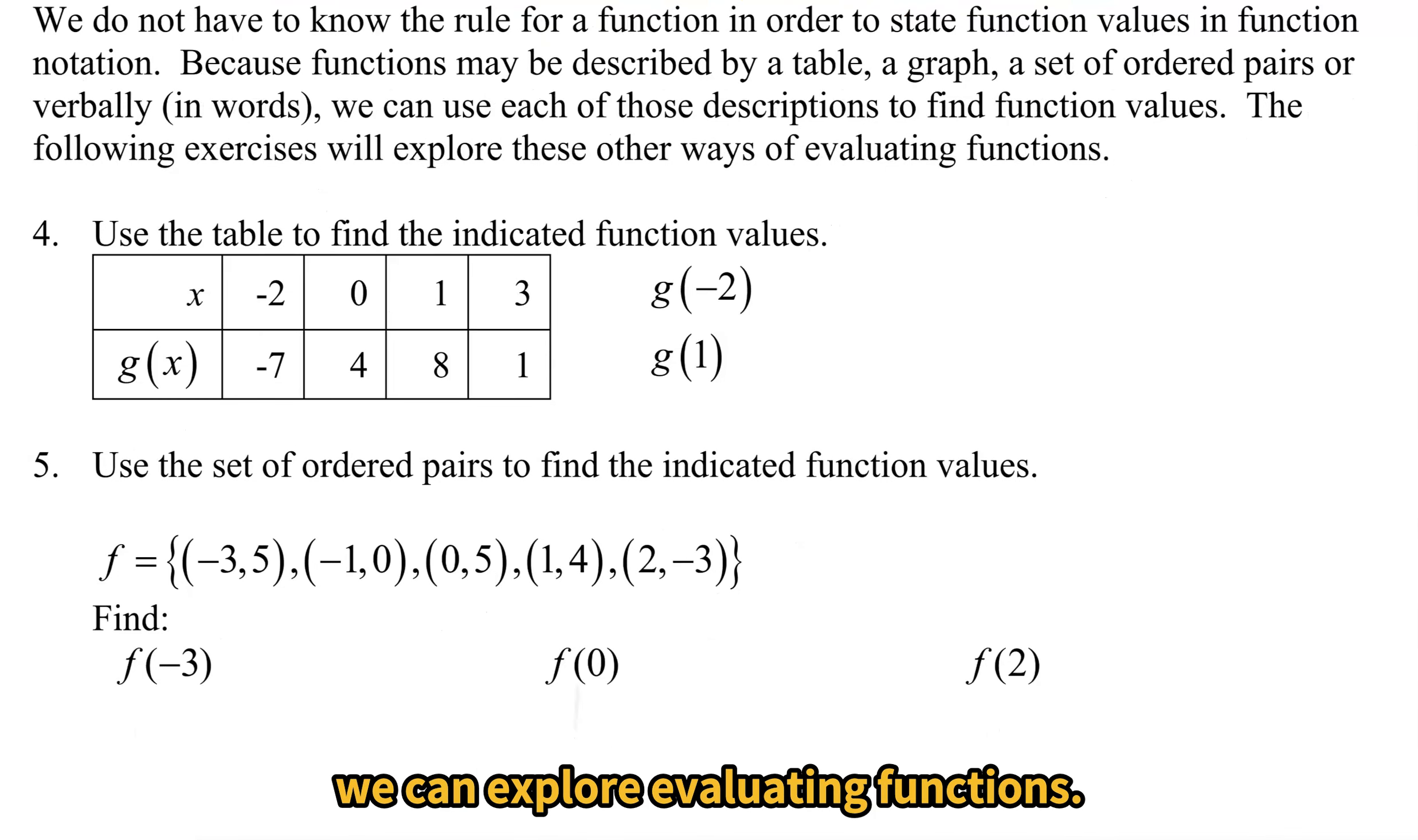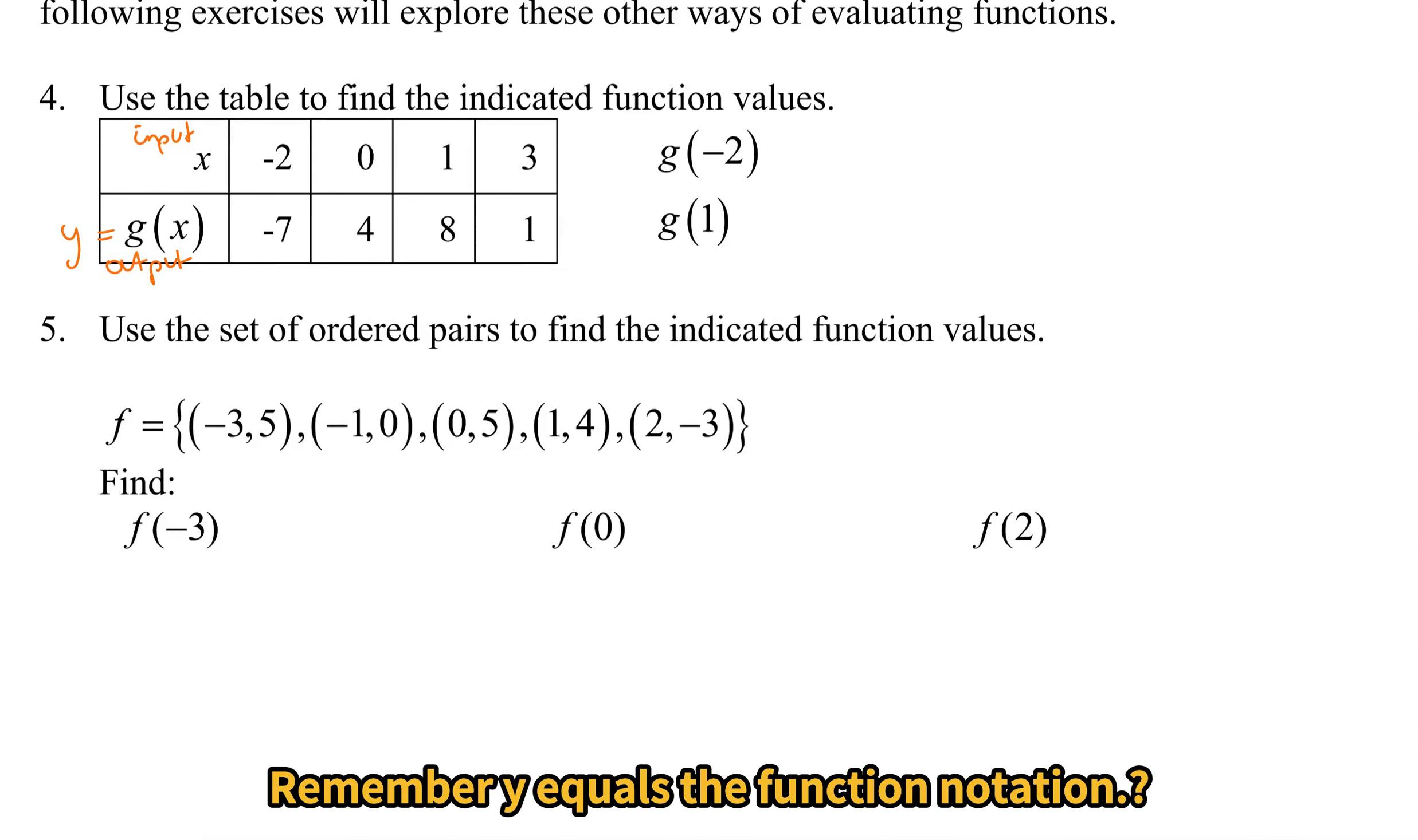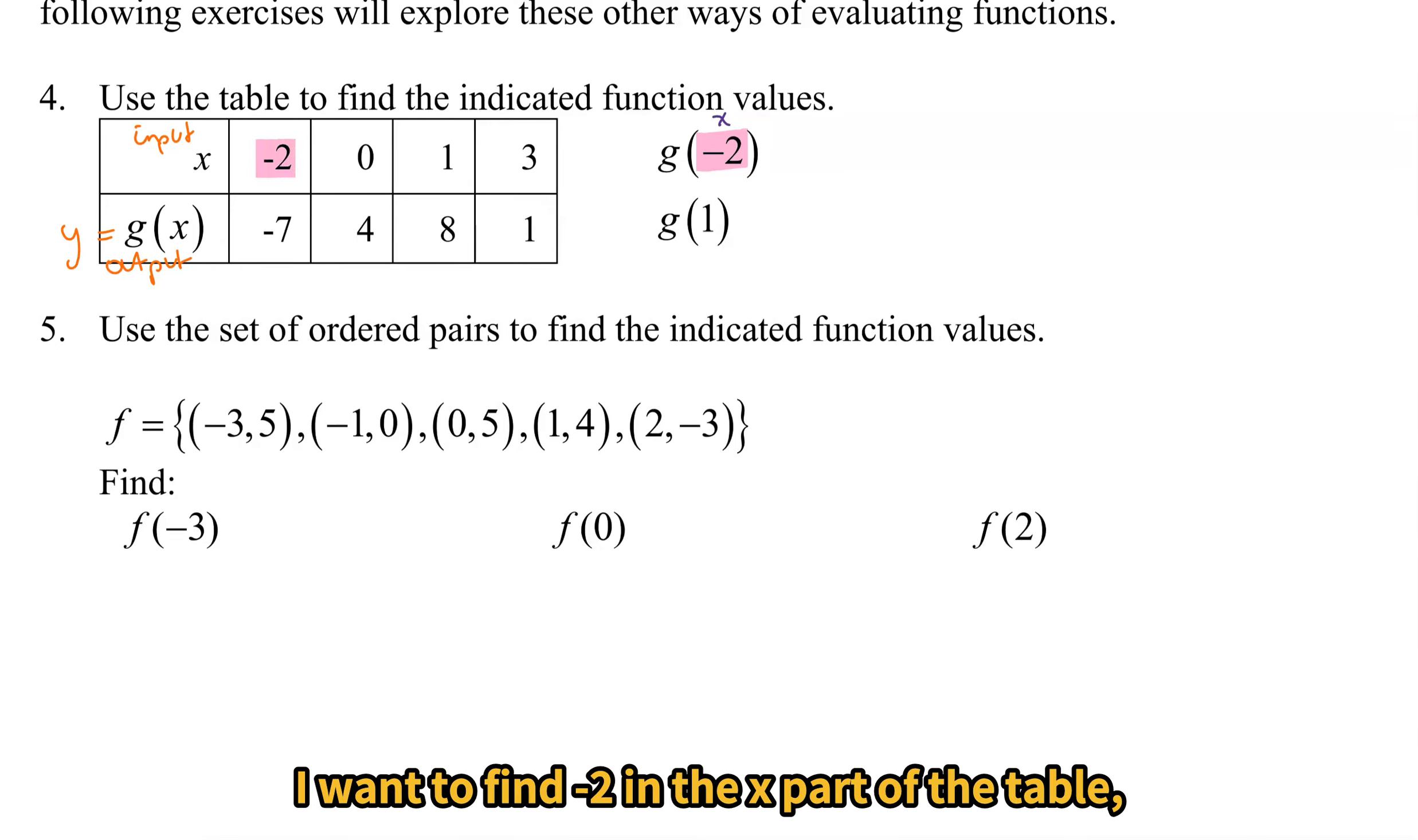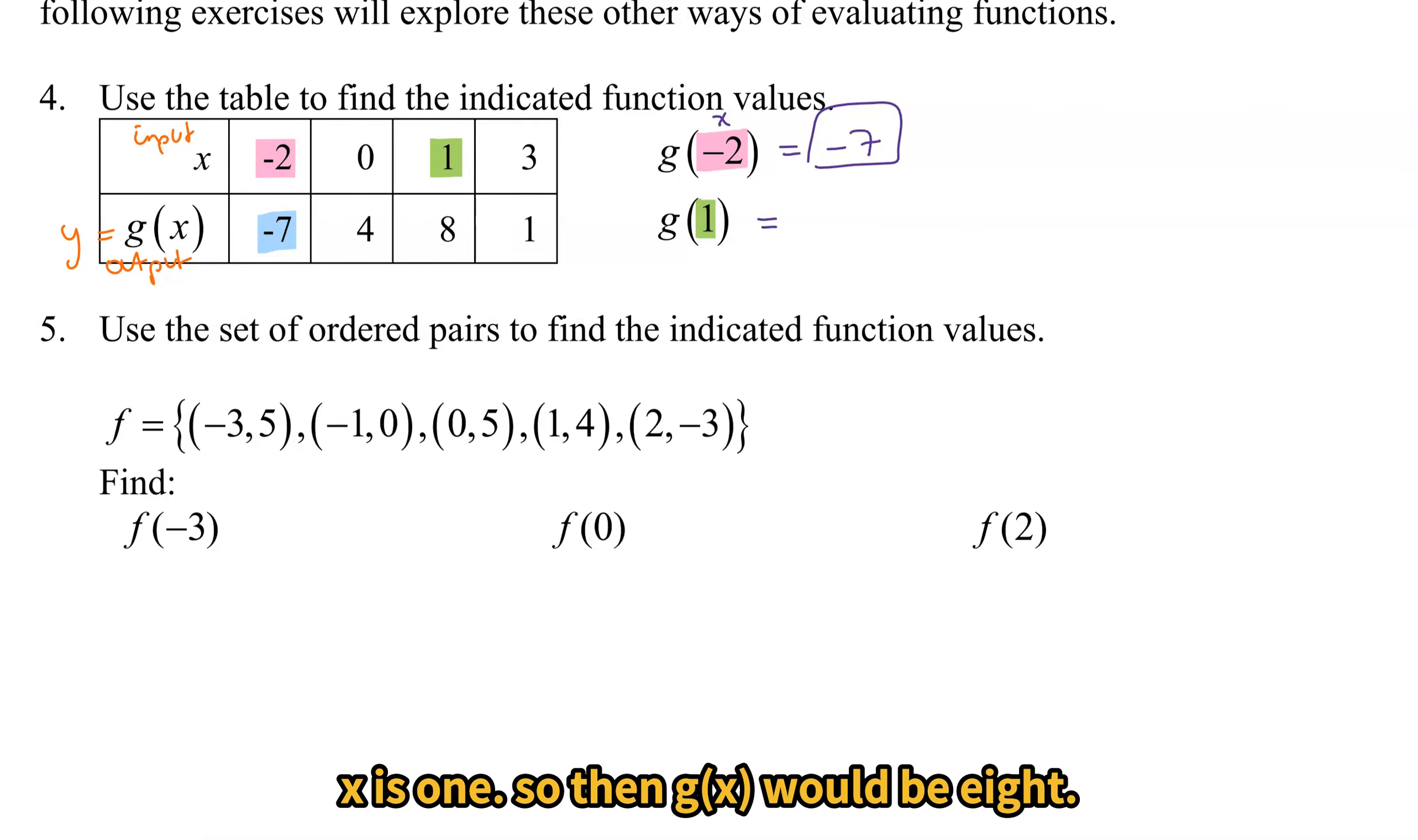So let's look at other ways we can explore evaluating functions. Here we have a table in number 4. To find the indicated function values, use the table. Here we have our input x and our output g(x) or y. Remember y equals the function notation. So if I'm looking for g(-2), I want to find, remember normally x would sit here. I want to find -2 in the x part of the table. In this case x is in the first row. So I want to find -2. And then I look below that to find the output. g(-2) is -7 according to the table. I can do the same thing with g(1). I find x = 1 in the table. Notice I'm on the x row for this one. x is 1. So then g(x) would be 8.